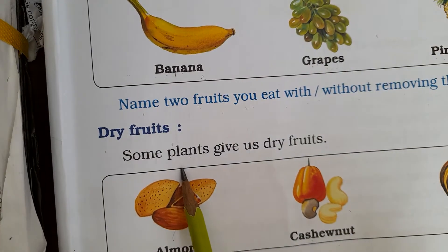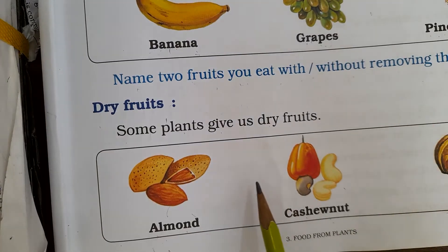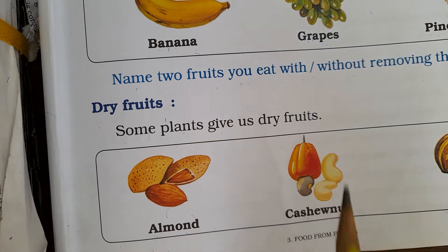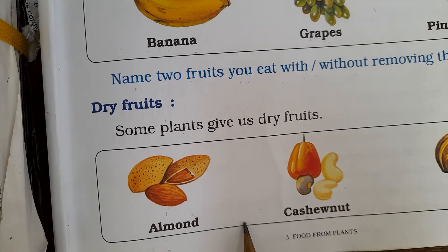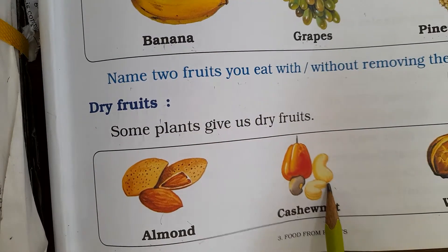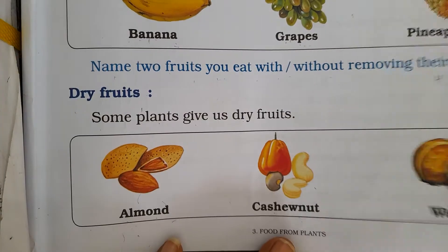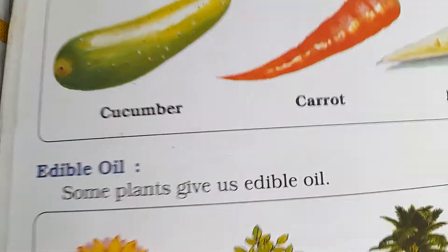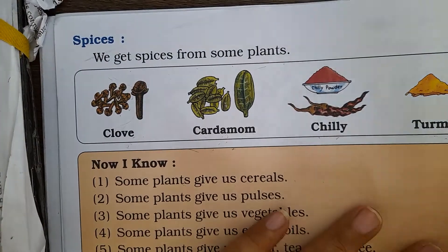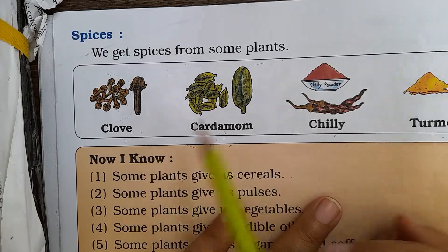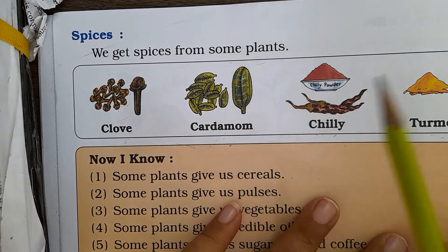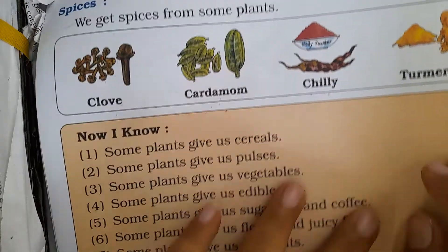Next, dry fruits. We get dry fruits from some plants — almond, cashew nut, and walnut. Next, spices. We get spices from plants too, like clove, cardamom, chili, and turmeric.